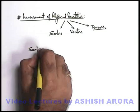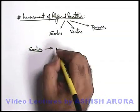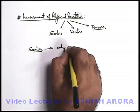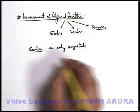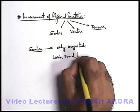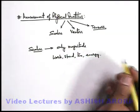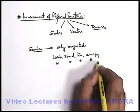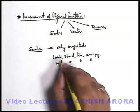Now if we talk about scalars, these are the physical quantities which are represented just by magnitude. Only magnitude is sufficient to represent scalars. Like we talk about work, speed, time, energy — these are the physical quantities denoted by symbols w, v, t, e. These are scalars because we never associate a direction with time, work, speed, and energy.